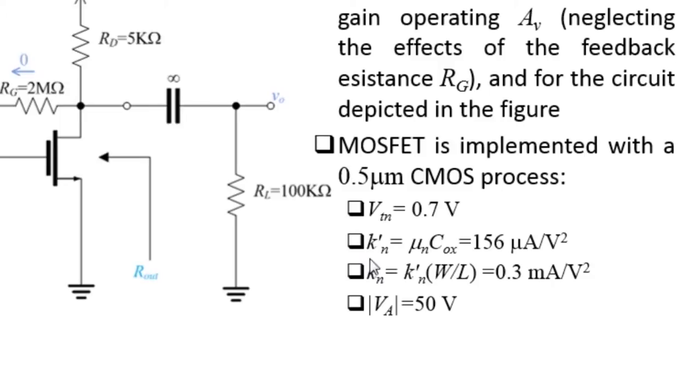A process transconductance KN prime equal to 156 micro amps per square volts, and the transconductance KP prime equal to 0.3 milliamps per square volts.